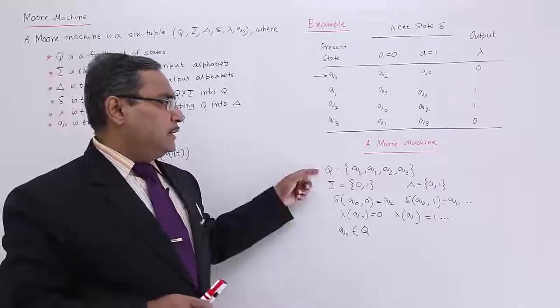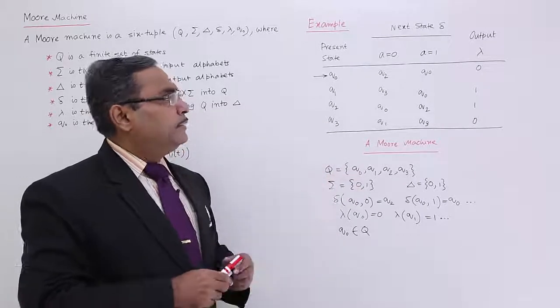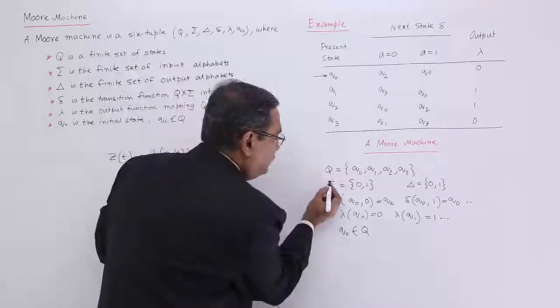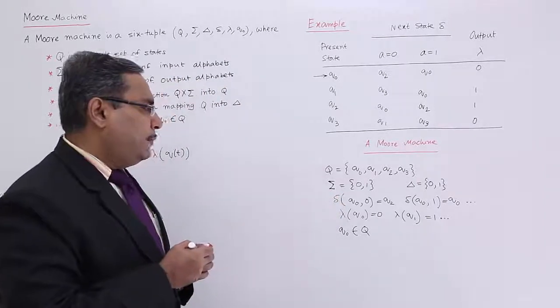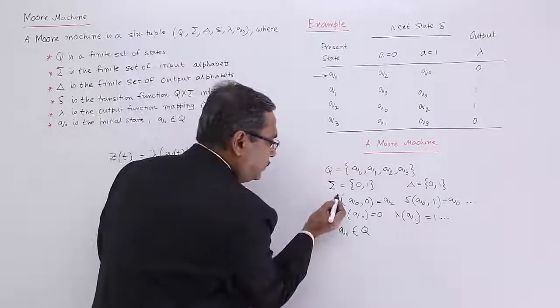Q is the finite set of states consisting of these states. Sigma is the finite set of input symbols having these, and then we have this delta, the output symbols. This is my delta for the transitions.